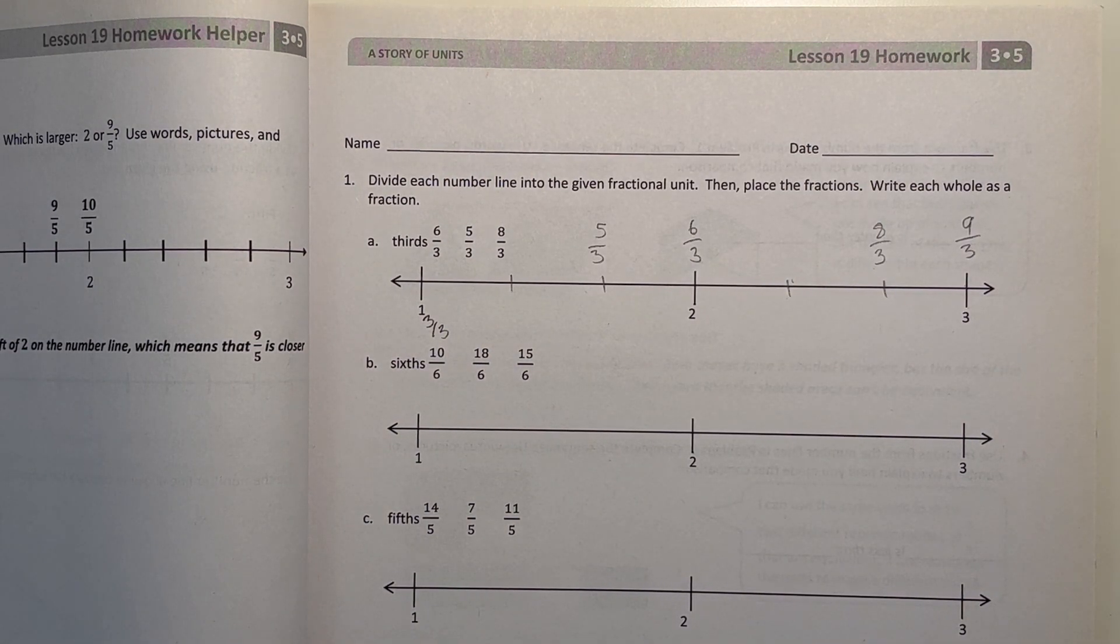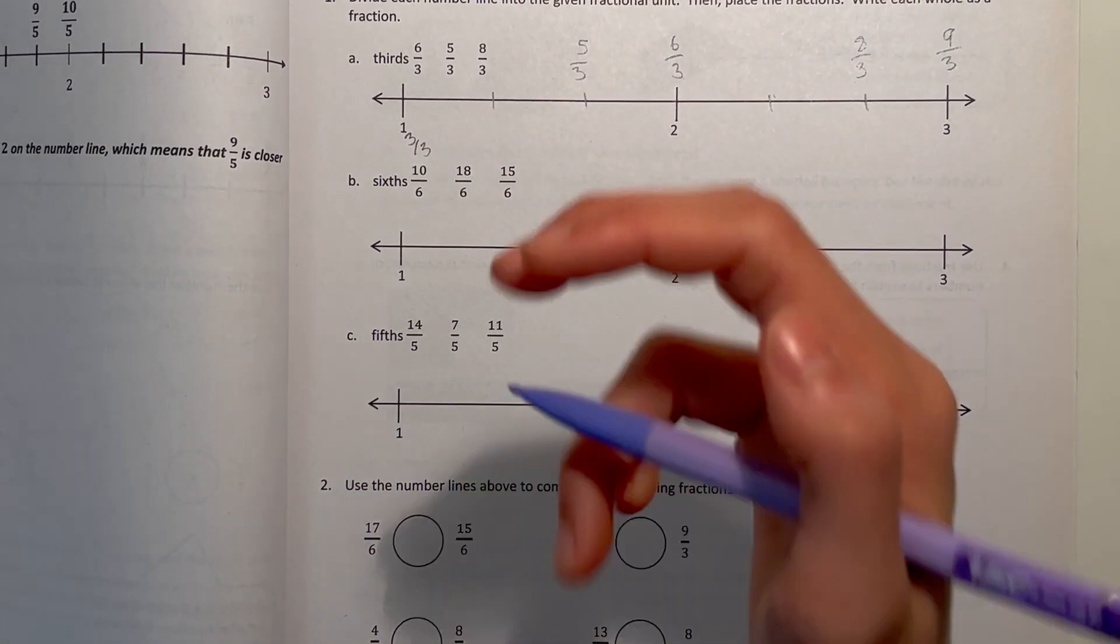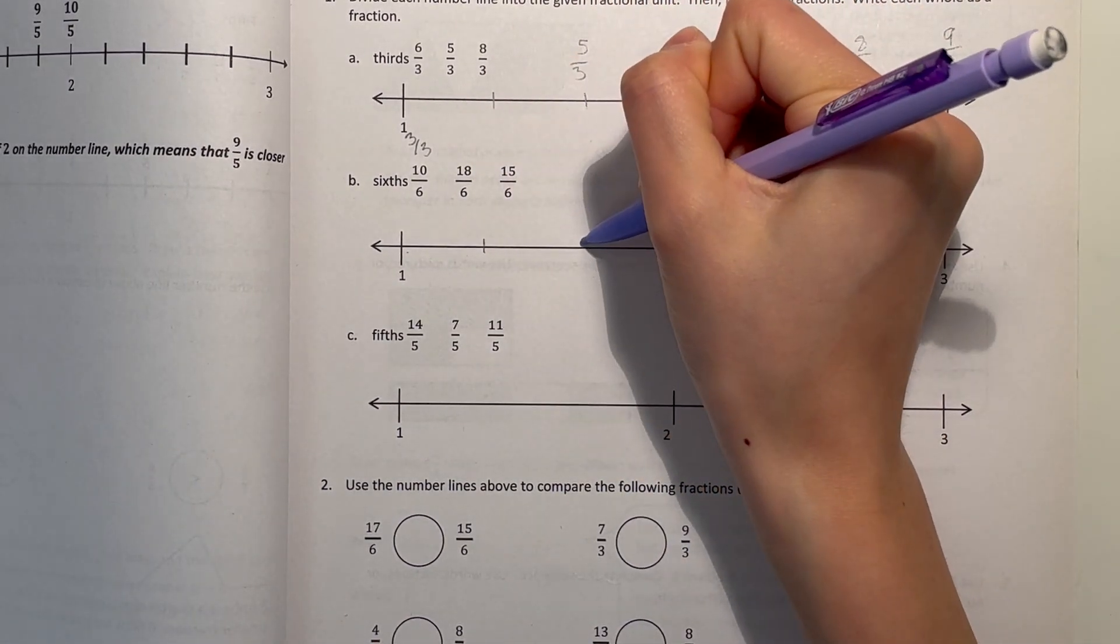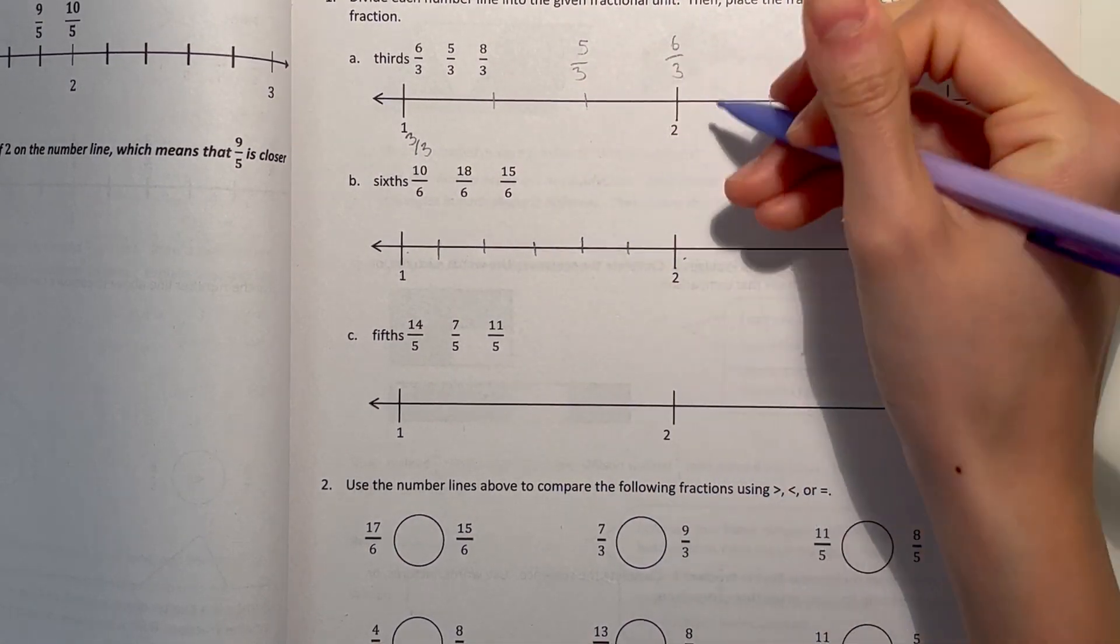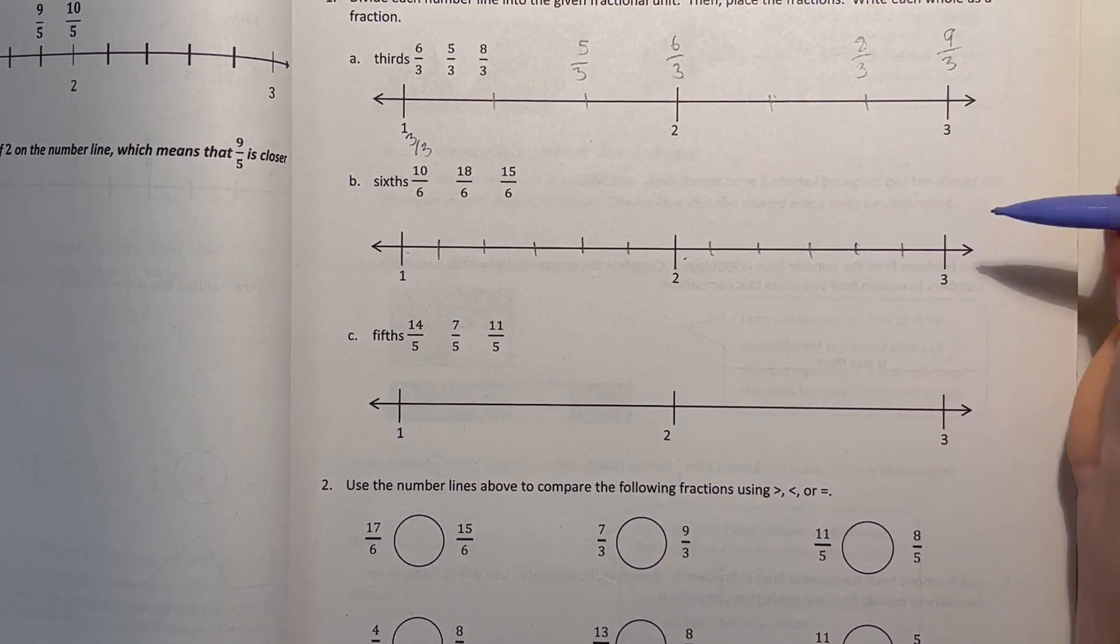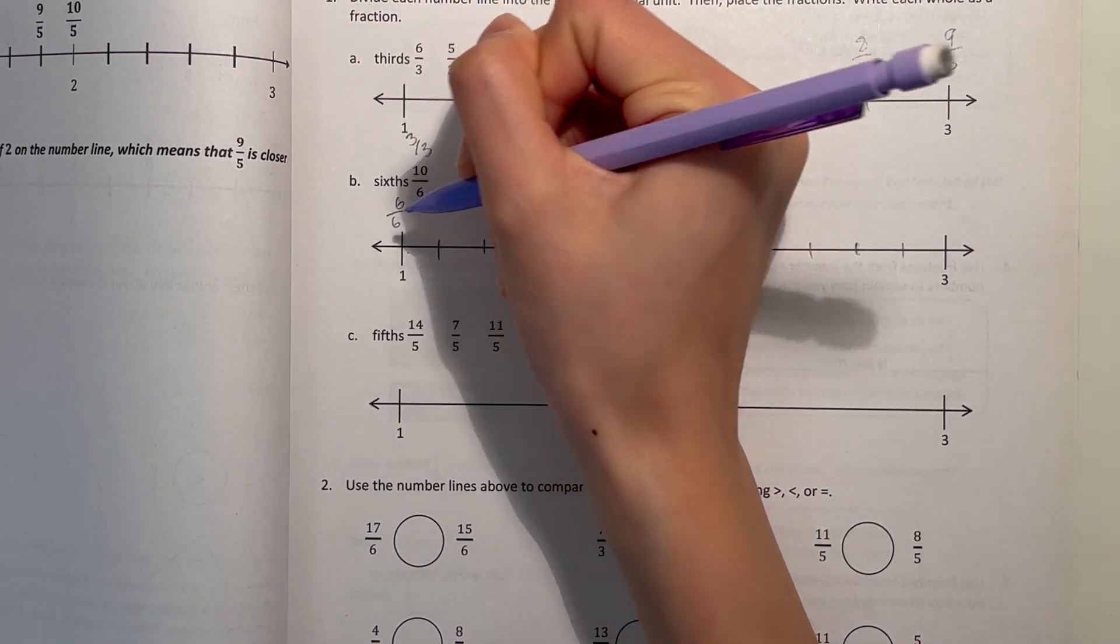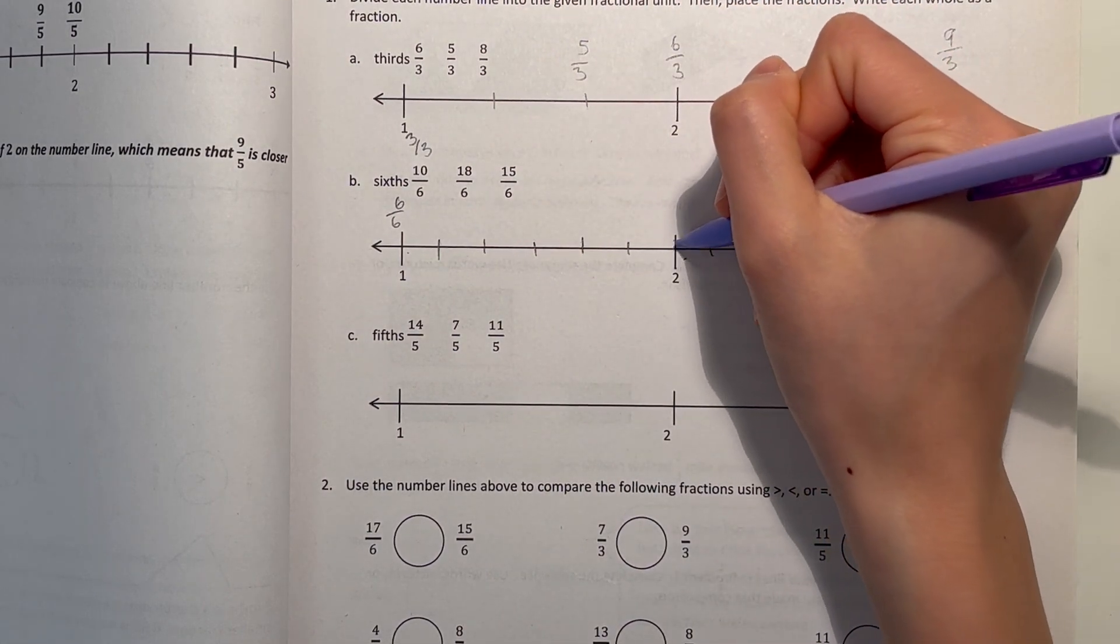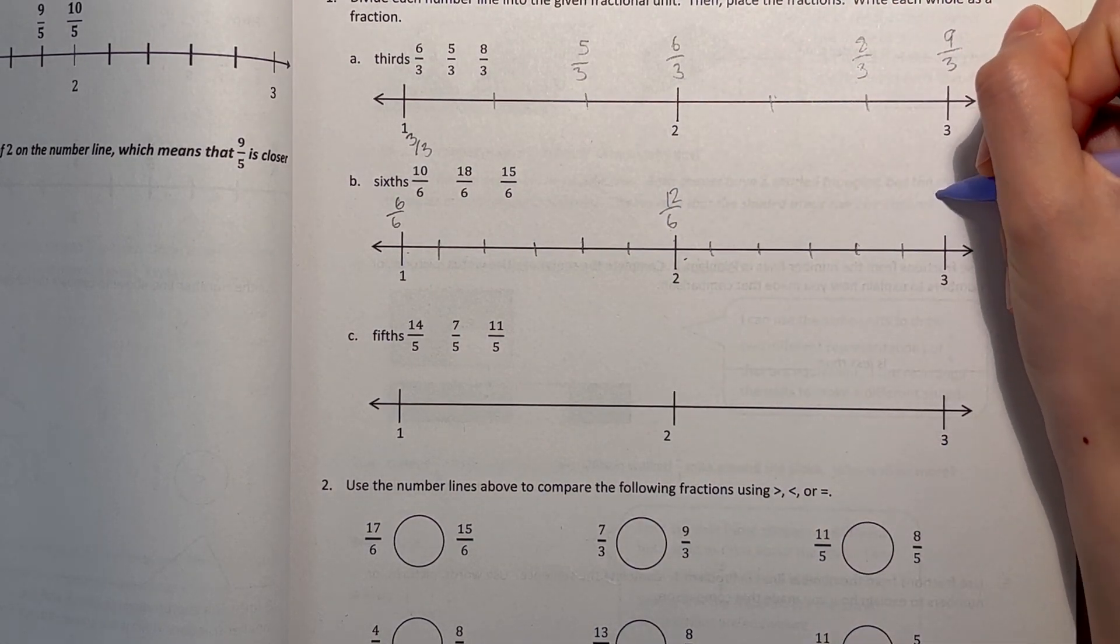Alright, and I think that's it. Now for B, we have sixths. So between 1 and 2, we gotta separate into 6. So we can separate into thirds first, and then separate each third into half. Cause that way it's easier to separate them into equal pieces. So 1 whole is 6 over 6. So that means 2 is, 6 times 2 is 12. So 12 over 6. And 3 times 6 is 18 over 6.